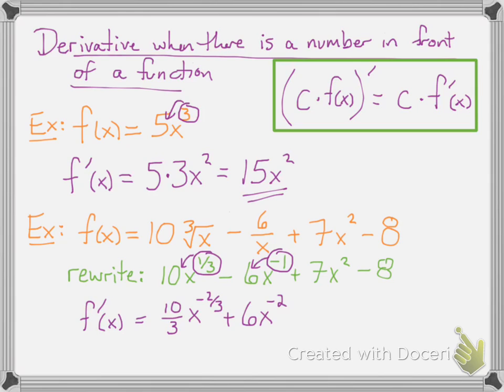Next, 7x squared: bring the 2 down in front and multiply by 7, so you get 14x. The derivative of 8 is 0 since it's a constant, so you don't need to write plus 0 or minus 0.